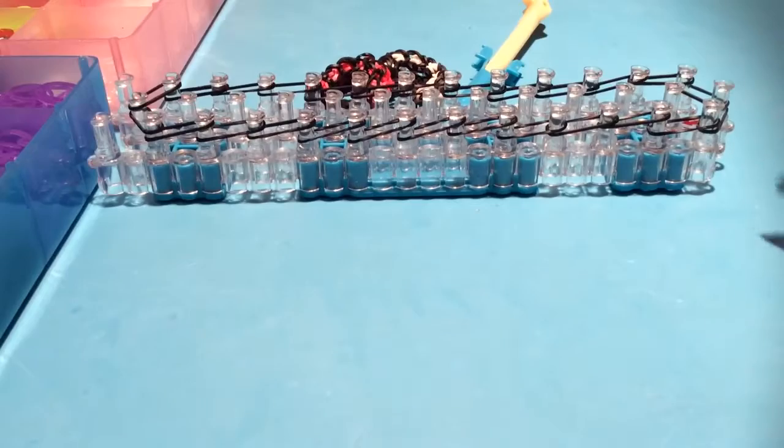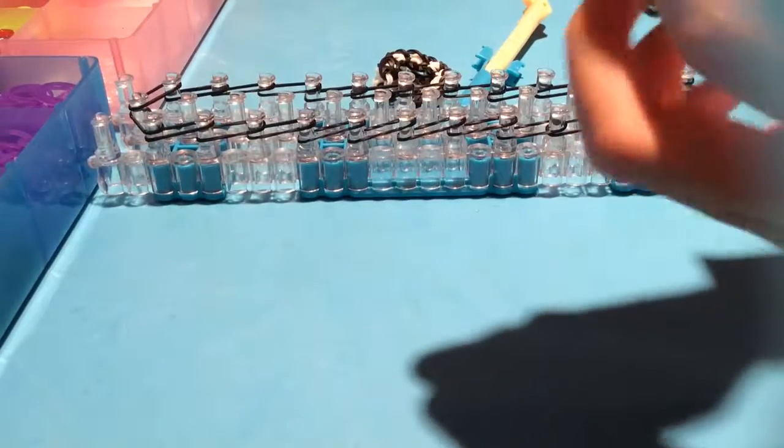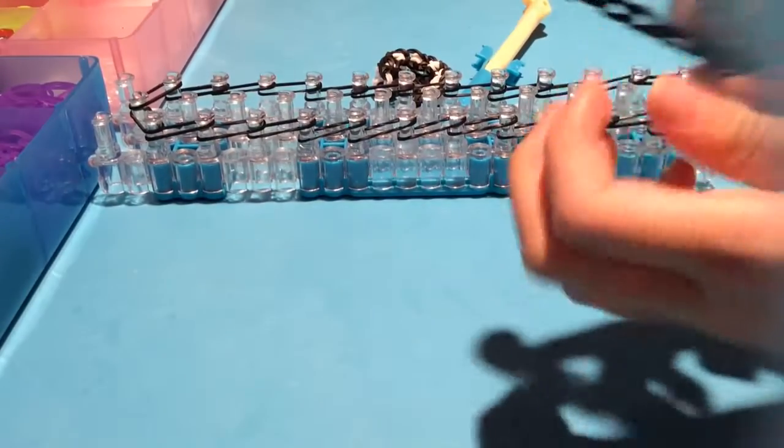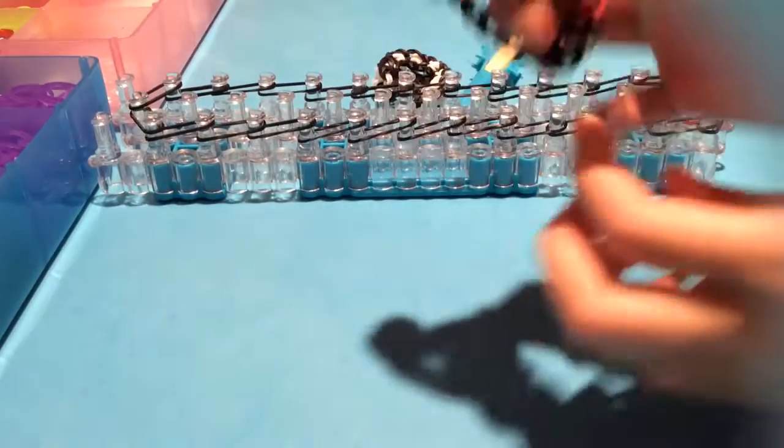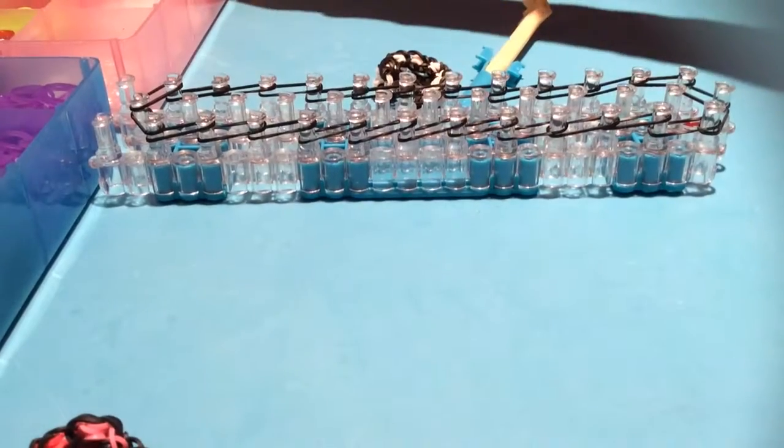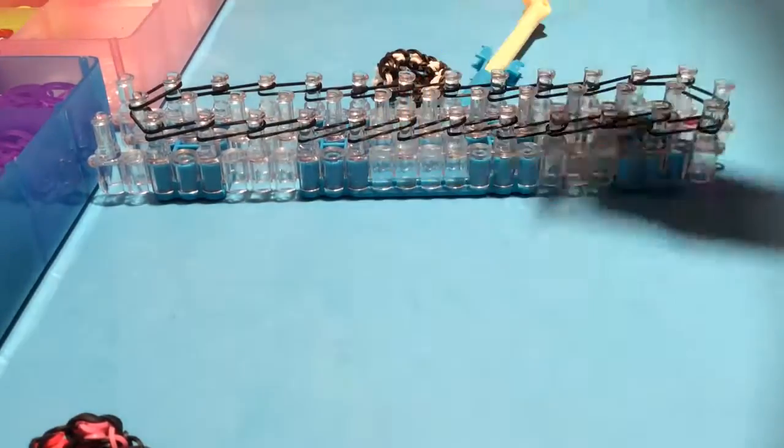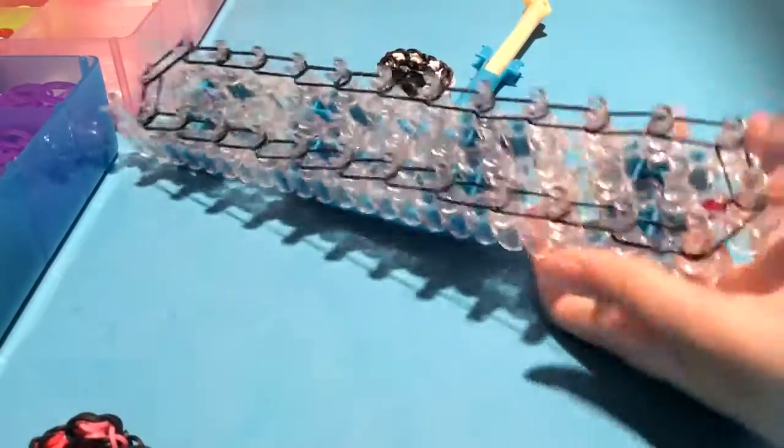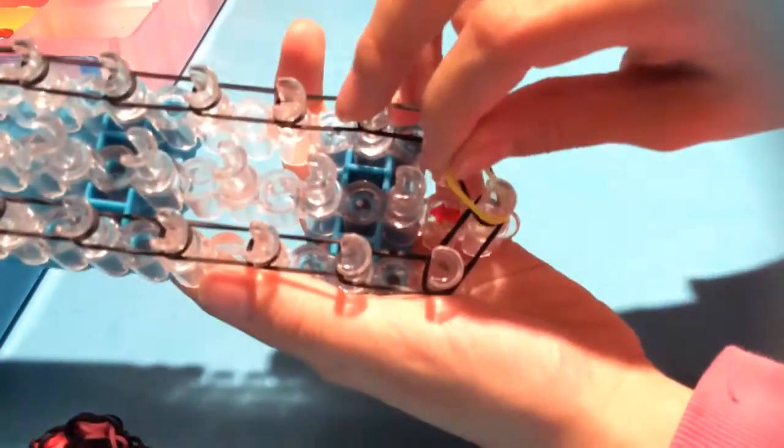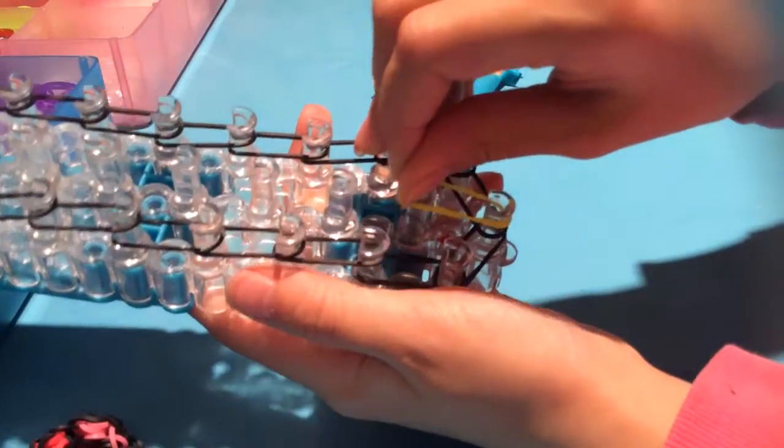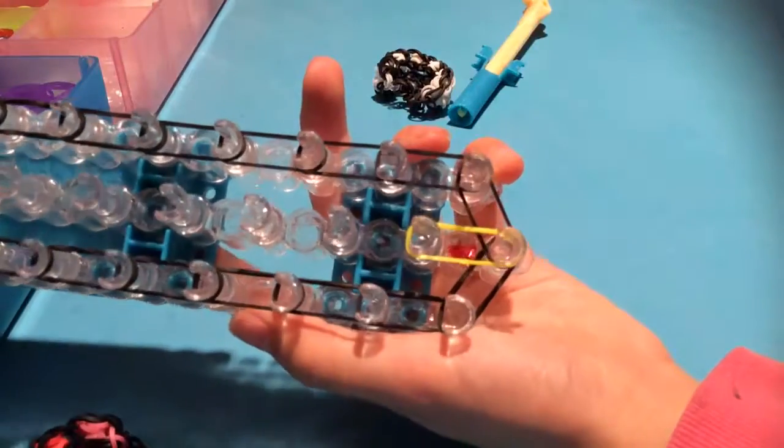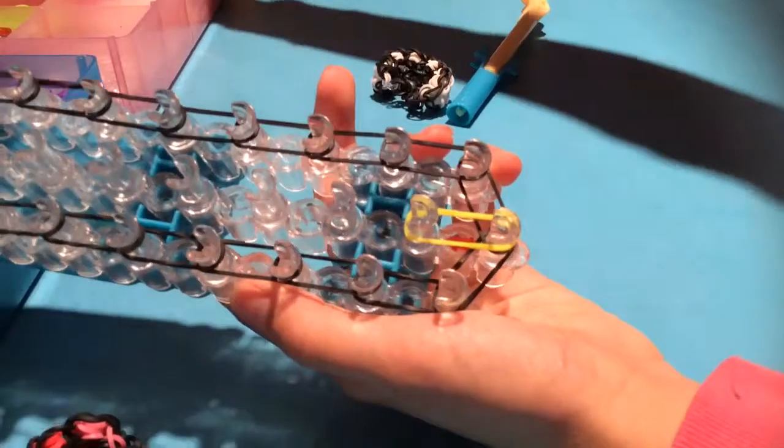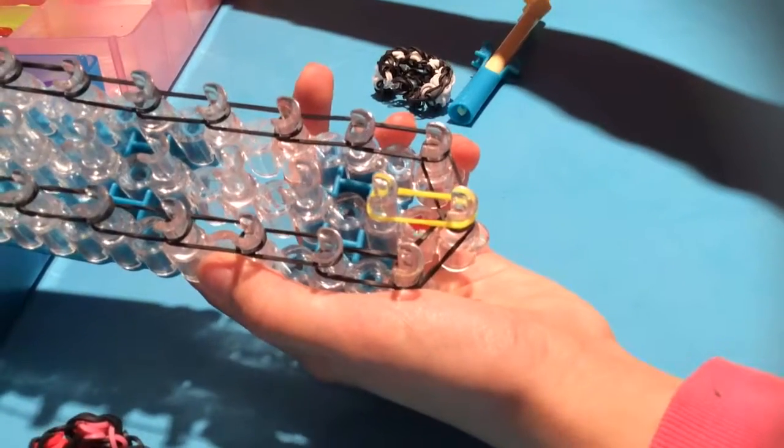So now you take your first color of the cloven, which is the first one you want. Mine will be the yellow and place it from the arrow, the one just below the arrow, the peg to the one that's above the arrow, the first one.